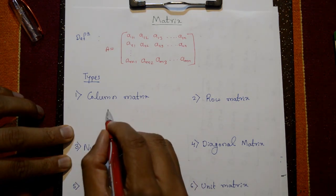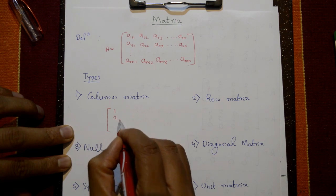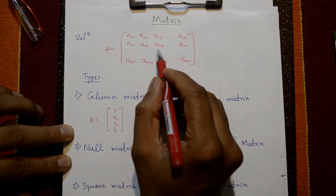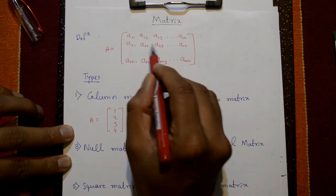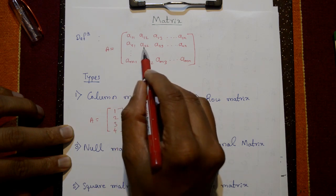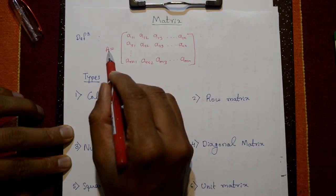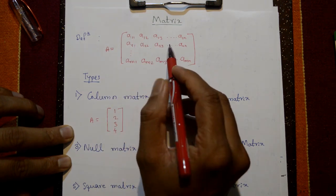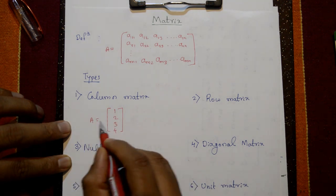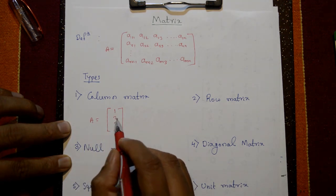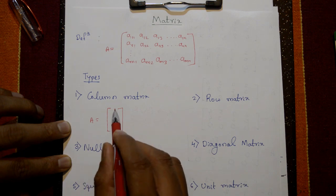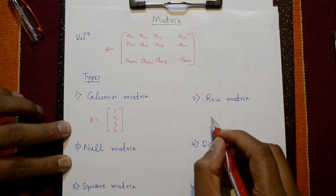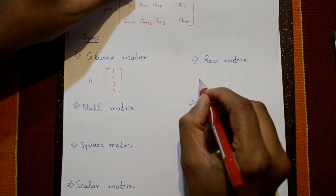The first type is a column matrix. Take A equal to — elements a11, a12, a13, a21, a22 — the matrix is denoted by capital A and elements in small letters. For example, A equal to [1, 2, 3, 4]. A matrix with any number of rows but only one column is called a column matrix.